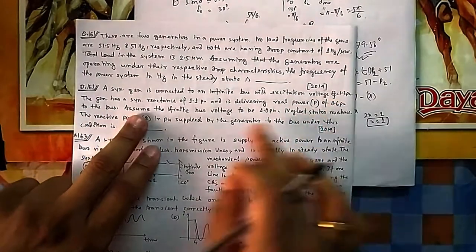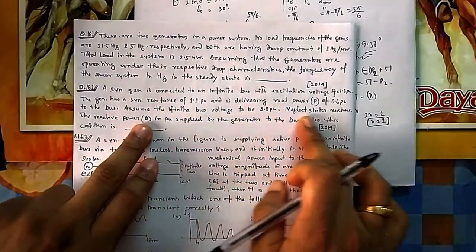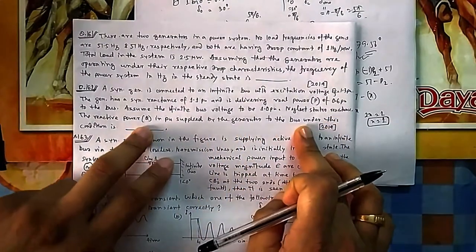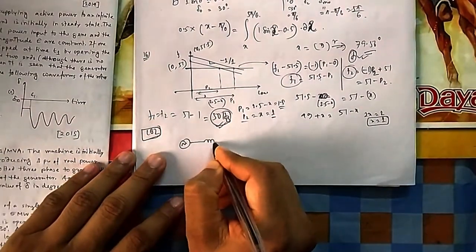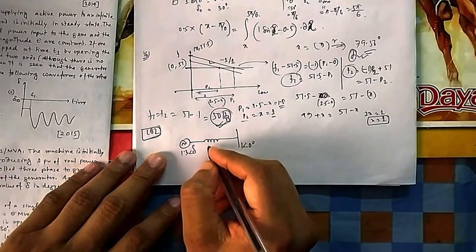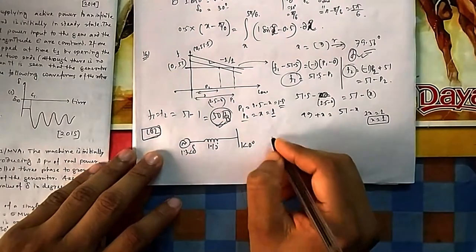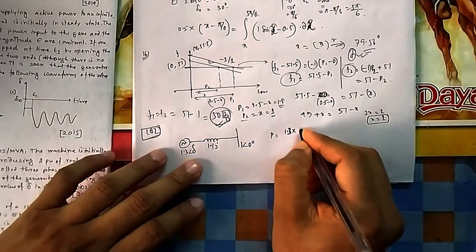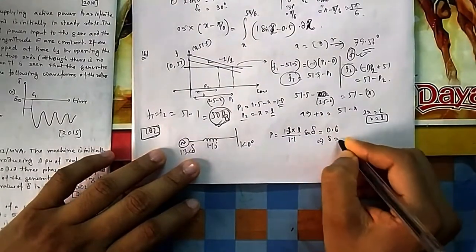Question 162: A synchronous generator is connected to an infinite bus with excitation voltage 1.3 pu and synchronous reactance 1.1 pu, delivering real power of 0.6 pu. The infinite bus voltage is 1 pu at angle zero. Using P = (E·V / X)·sin δ = (1.3 × 1.0 / 1.1)·sin δ = 0.6, we get δ = 30.51 degrees.